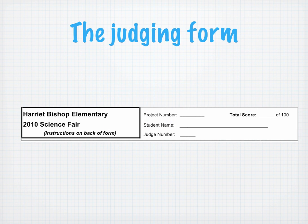First, at the top of the form, the student name and project number will already be listed when you receive this sheet, and you'll be asked to fill in your judge number, which will be provided the morning of the fair. This is also where the total score for the project is entered by judges after judging is complete.